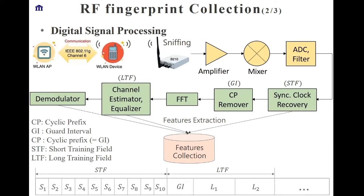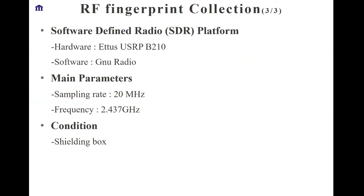In this section, I will introduce some of the hardware, software, and relative parameters we used. The receiver model is the USRP B210, and we design the receiving program using GNU Radio. There are many tunable parameters when receiving signals. In order to avoid surrounding interference, we implement signal transmission inside a shielded box.